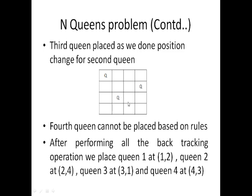When we go for placing the 4th queen, checking diagonal values, rows, and columns, we are unable to place the 4th queen. So we go 1 step backward. In the 2nd queen, it is already placed in the 4th position, so we are unable to move to the next level. We go 1 step further backward to the 1st queen.